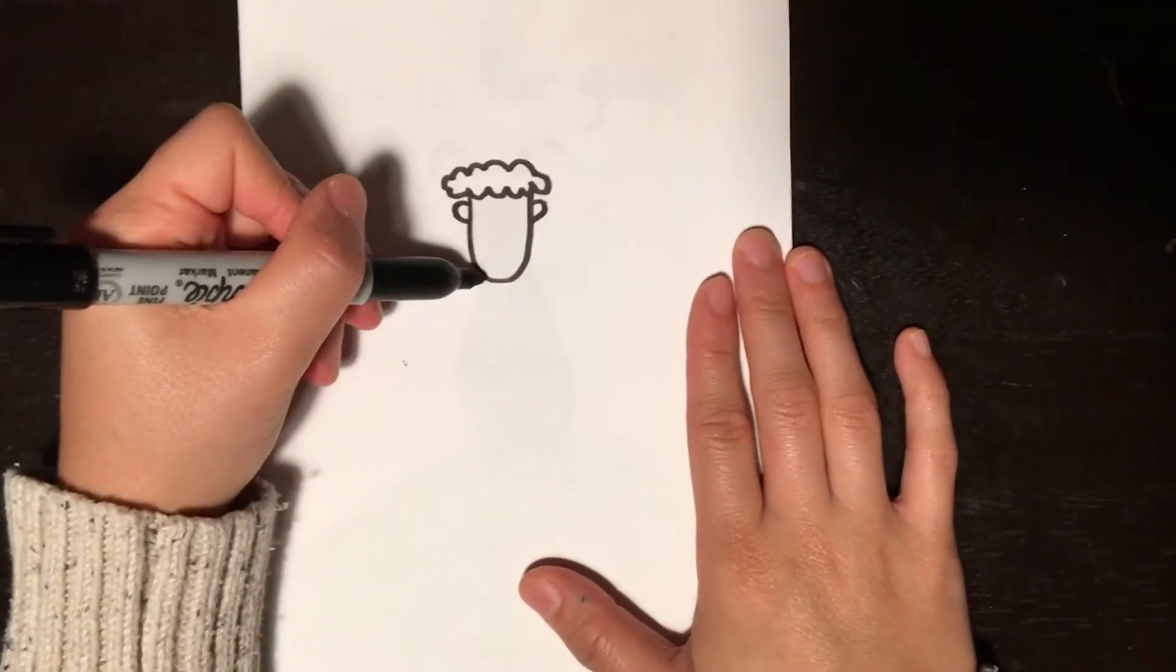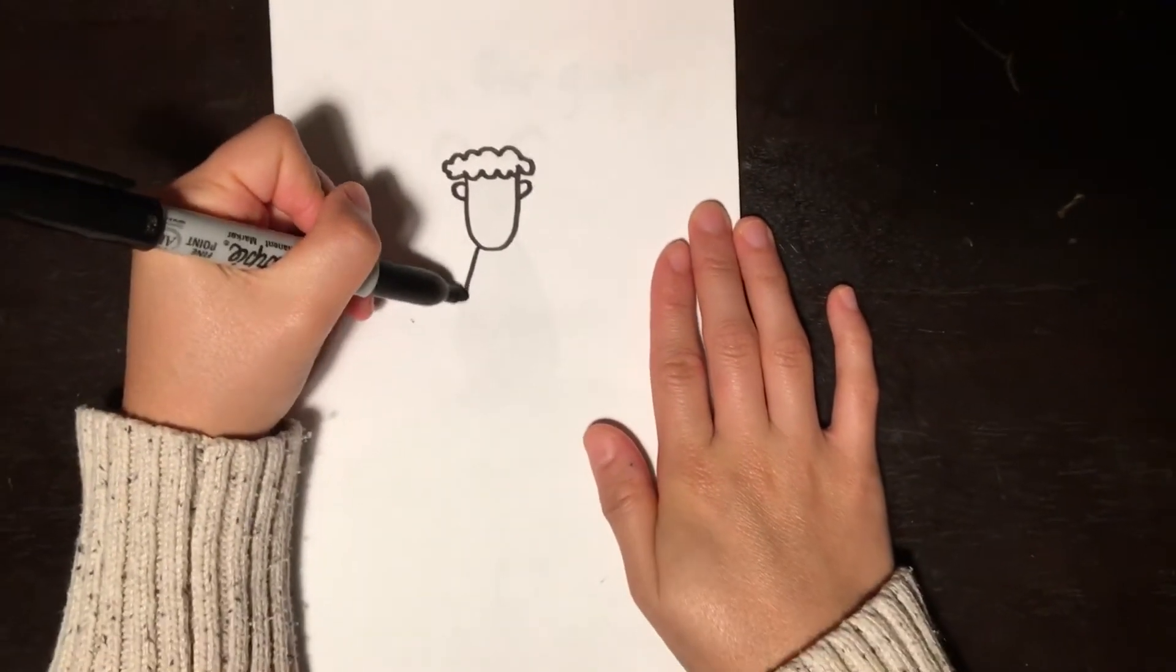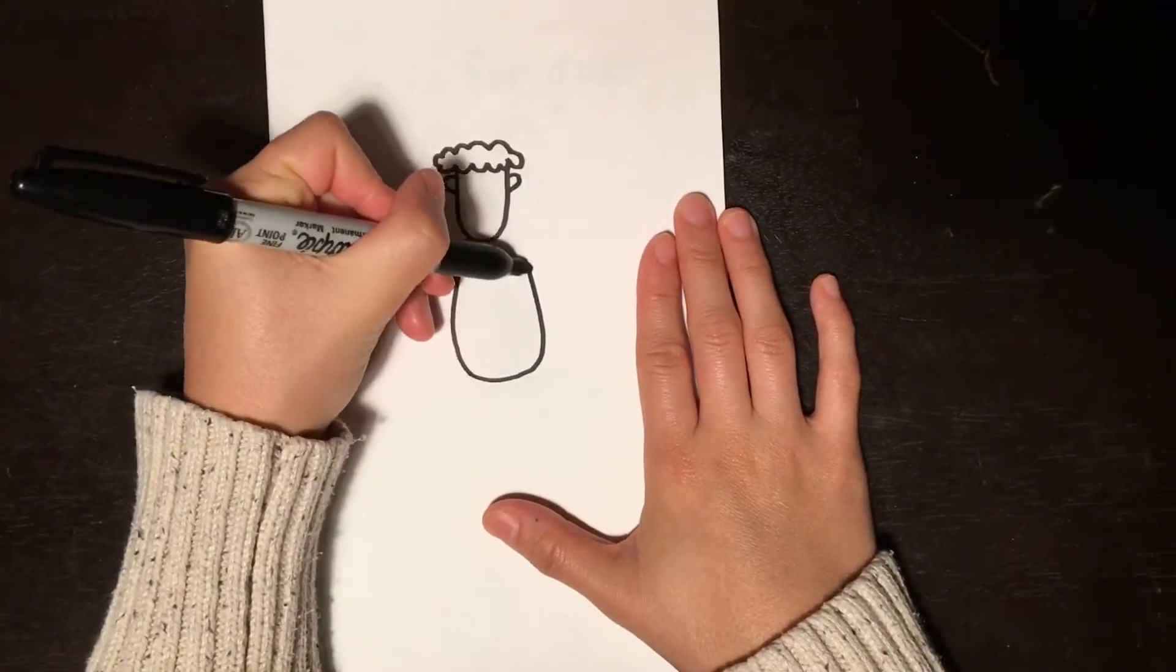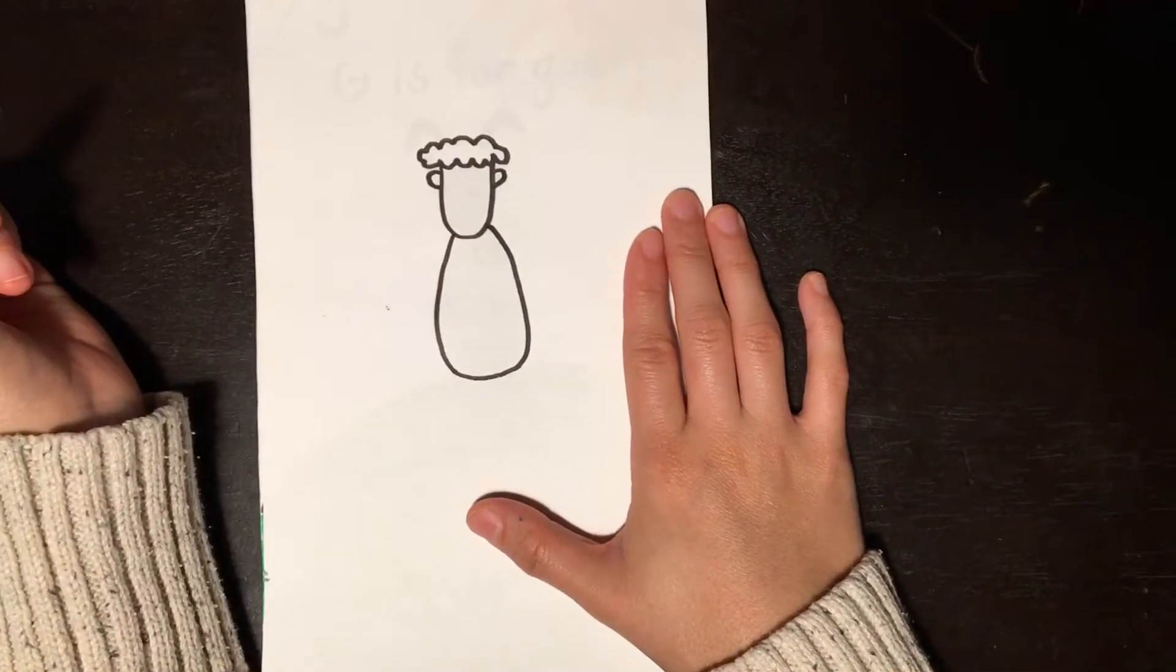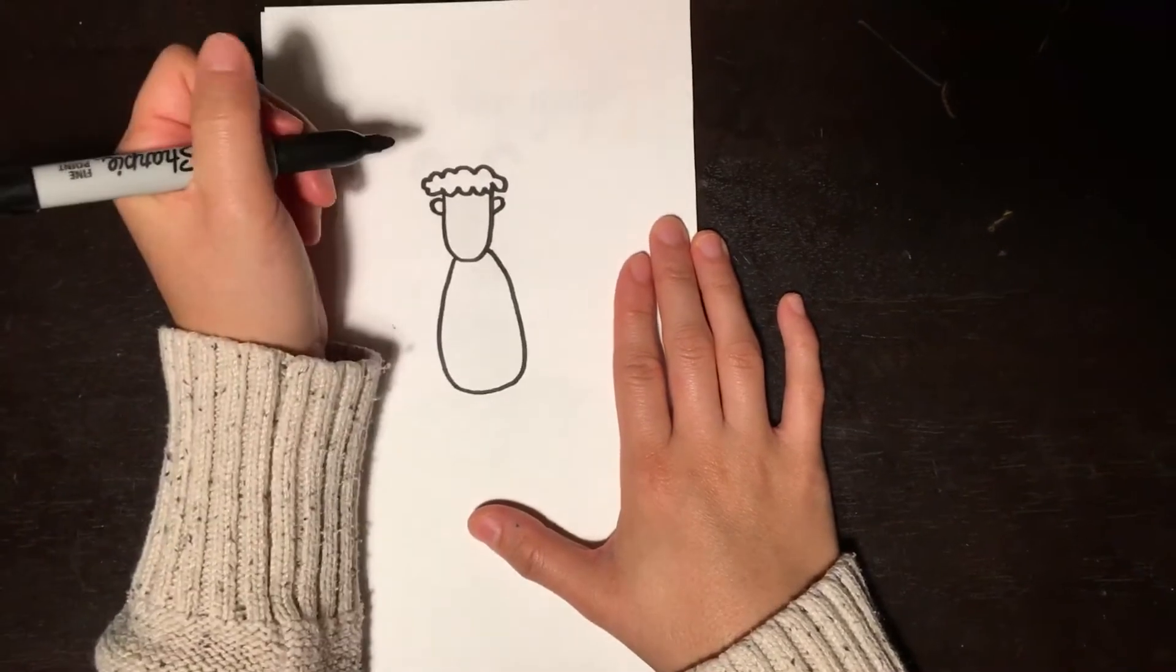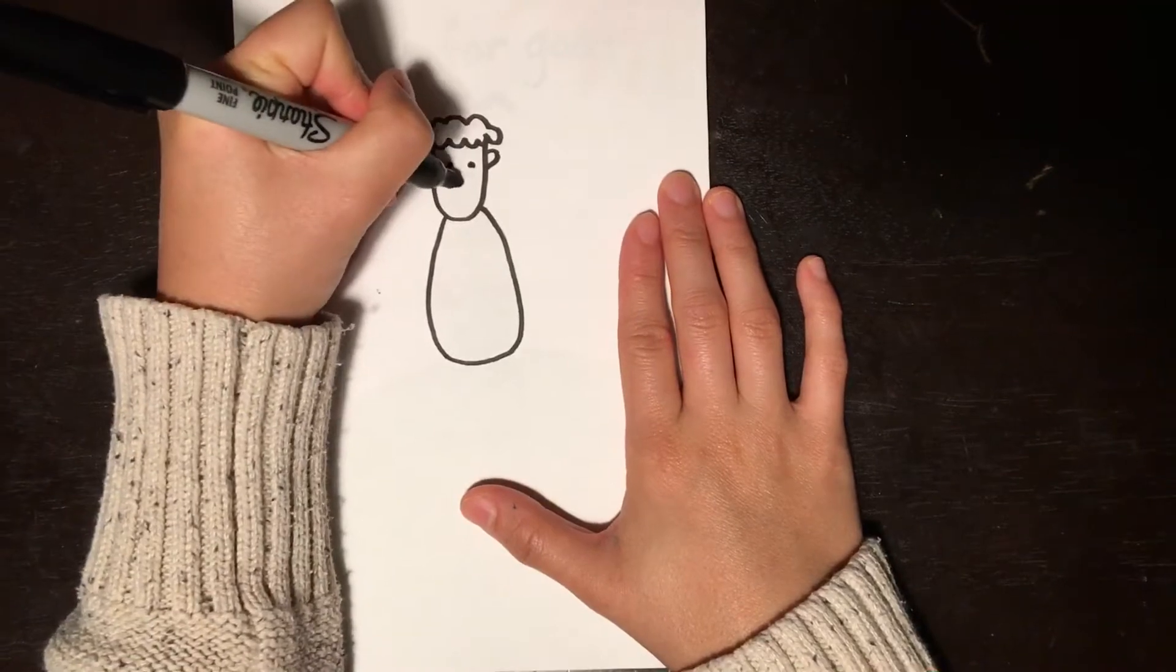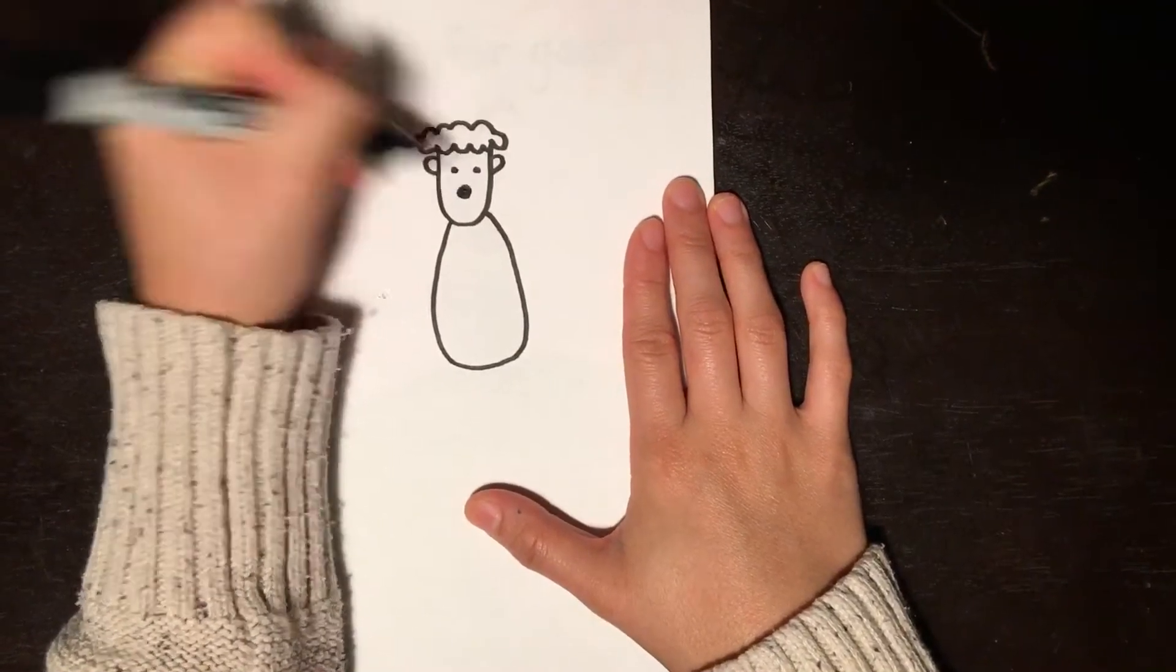Next I'm gonna come down here and make a little bit of an oval shape like this. And then I'm going to give it some eyes. And a nose. I'm gonna give it a big nose. There we go.